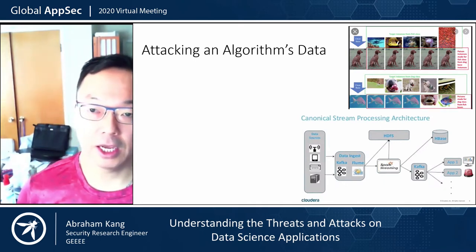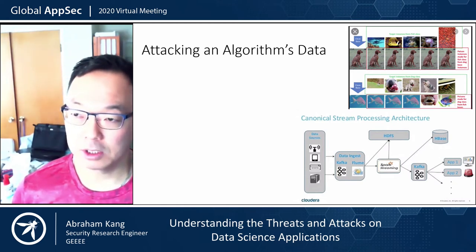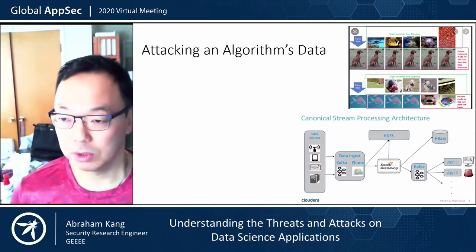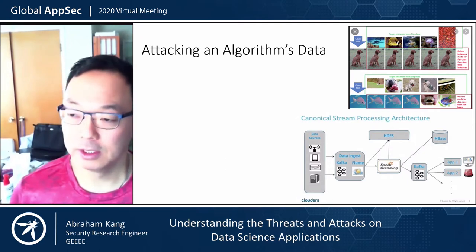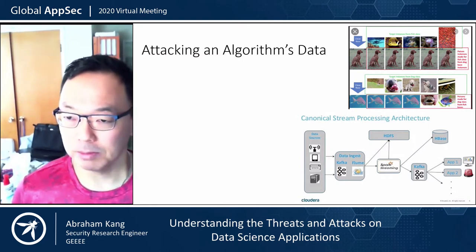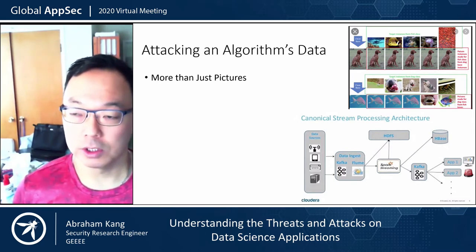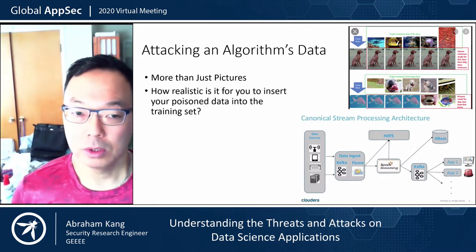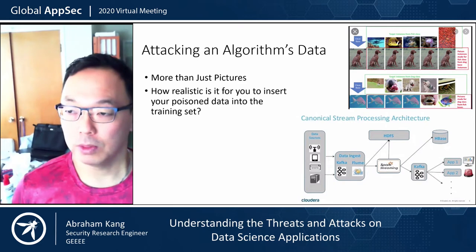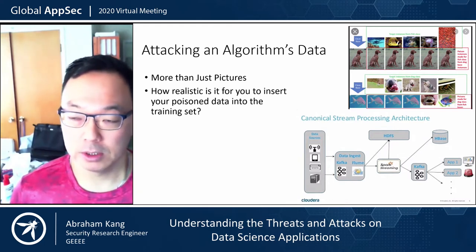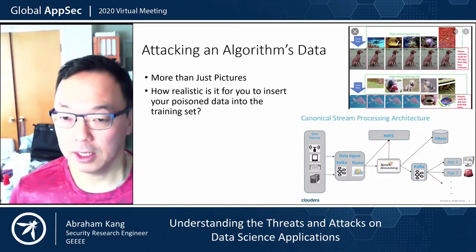Let's talk about attacking algorithm data. In the past, I've been talking about attacking machine learning models through data poisoning — you see a lot of papers discussing turning fishes into dogs or getting a model to misclassify images. But when we're talking about attacking an algorithm's data, it's more than just pictures. When you think about the realistic ability of an attacker to insert data into your training data directly, it's probably not that high a probability.